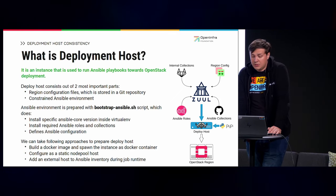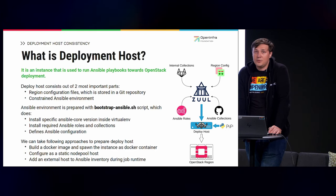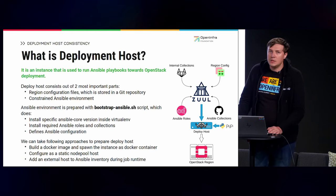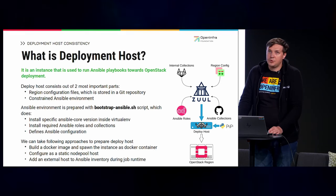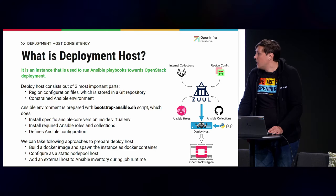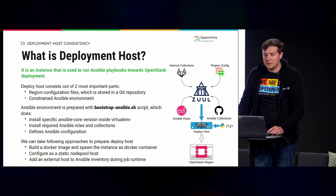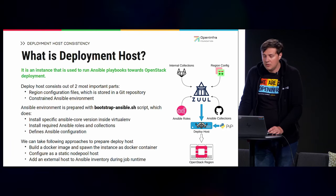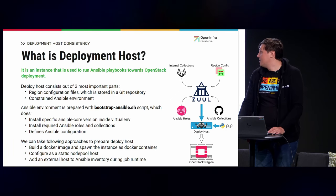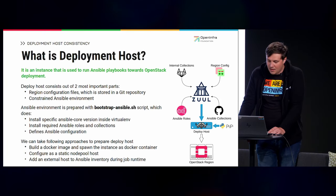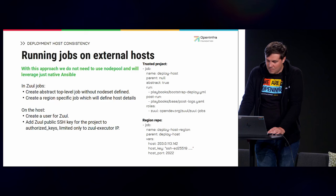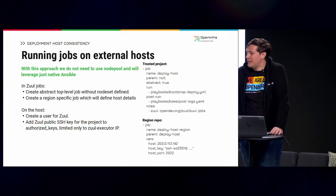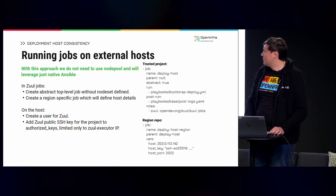We had multiple options for deployment host preparation. First would be to build a Docker image and promote it to our internal registry and then pull it — but we still need to ensure nobody runs anything outside the Docker container. The next option would be to configure the host as a static node pool, but that was too easy. So we decided to add an external host to the Ansible inventory during job runtime, which is actually quite an underrated functionality in Zuul and can be quite handy in some use cases.